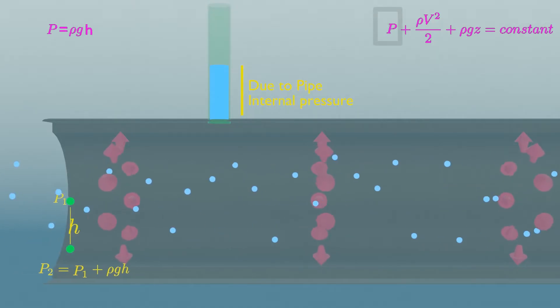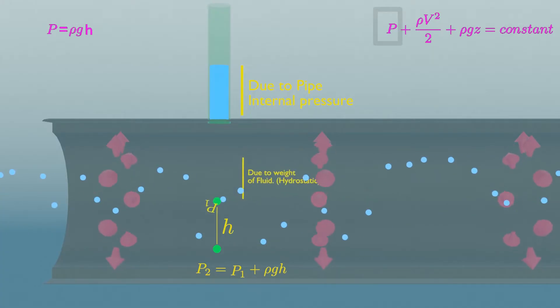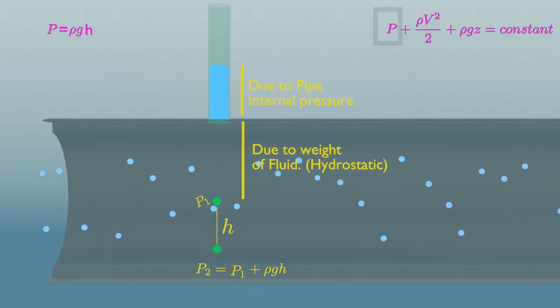So, the static pressure at point 1 is pressure due to internal pressure plus pressure due to weight of fluid, which is hydrostatic pressure. I hope now you understand the difference between static and hydrostatic pressure.